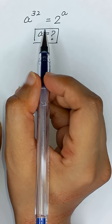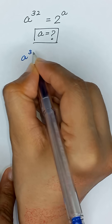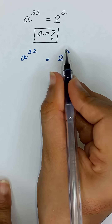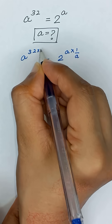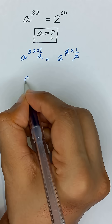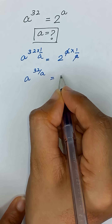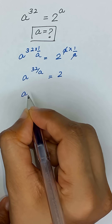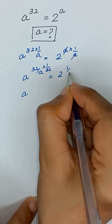We are given the equation a to the power 32 is equal to 2 to the power a. We will remove the power a by multiplying both sides by the power 1 divided by a. This cancels the a in the exponent, giving us a to the power 32 divided by a is equal to 2.